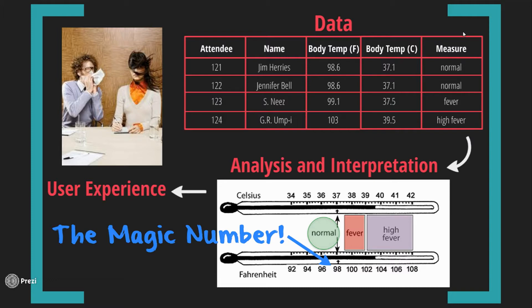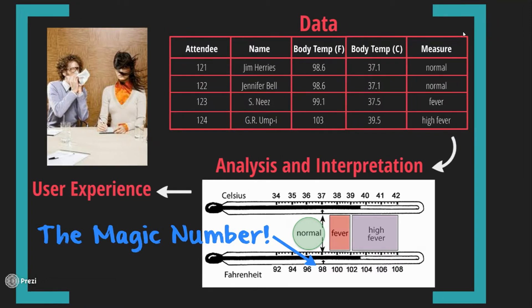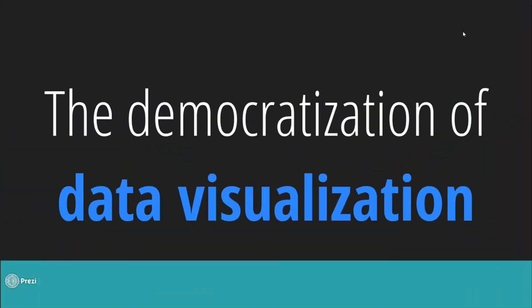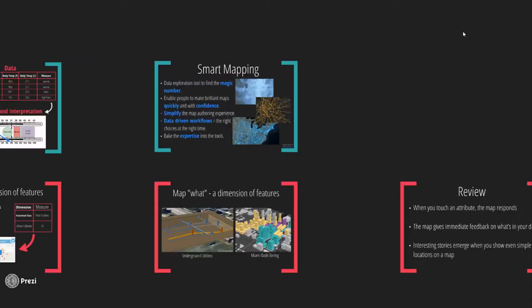If we had a map that showed everything above 98, it wouldn't be as meaningful. How would Jenks classify this data? It would be 97 to 99.5 — there's no difference between any of those temperatures in classification techniques. It's the magic number, the meaningful number. Smart mapping is quick, you can be confident about your mapping, it's simple, it has data-driven workflows, looks at your data and provides smart defaults, bakes the expertise into the tools — all the things we've found mapping all these years. It's the democratization of data visualization.